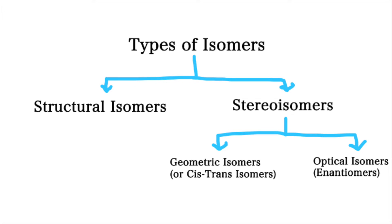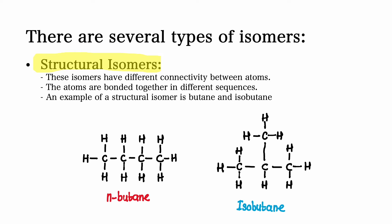There are several types of isomers. They include structural isomers and stereoisomers. Structural isomers have different connectivity between atoms — the atoms are bonded together in different sequences. For example, butane and isobutane are structural isomers.